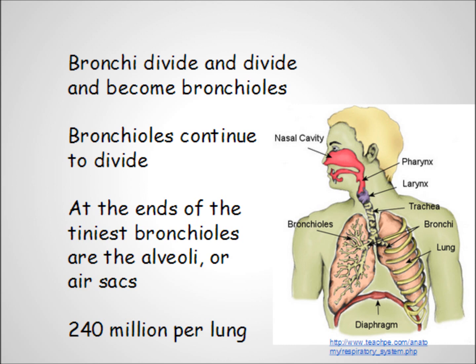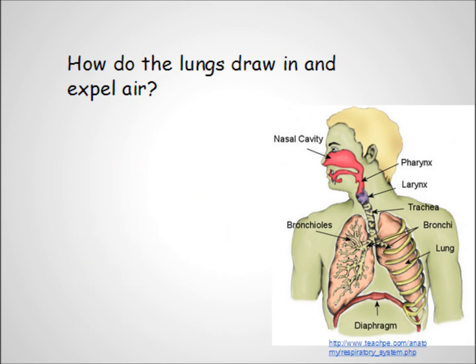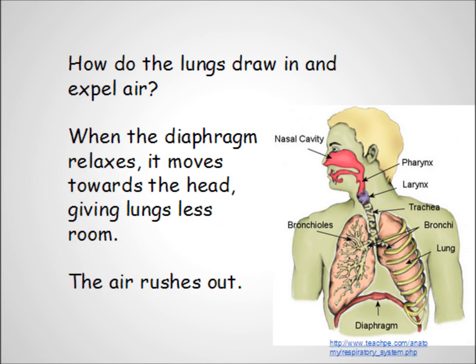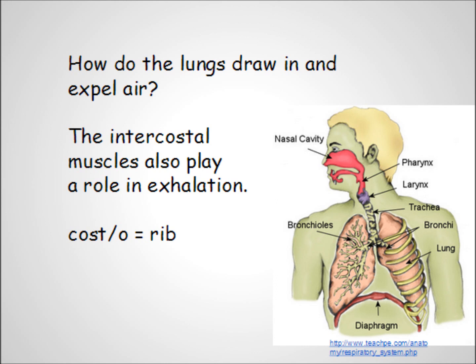Before we go on, we're going to step outside of the lungs for a moment. How do the lungs draw air deep inside and then exhale, ridding us of carbon dioxide? In our first lessons, we talked about the diaphragm, a muscle which separates the thoracic cavity from the abdominal cavity. When this dome-like muscle contracts, it gives the lungs more space, which creates a vacuum, and air rushes in to fill that vacuum. When the diaphragm relaxes, it moves back up towards the head, which gives the lungs less room, causing the air to move out of the lungs, carrying the waste CO2. While the diaphragm is the major muscular player here, the intercostal muscles, or the muscles between the ribs, play a role as well.